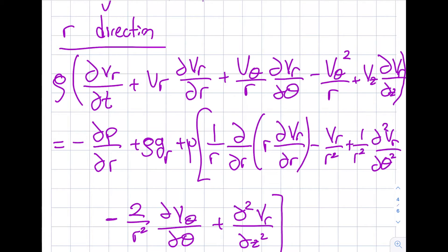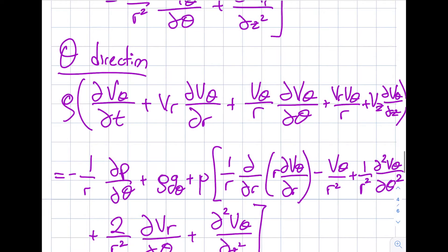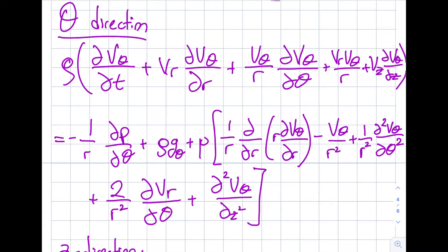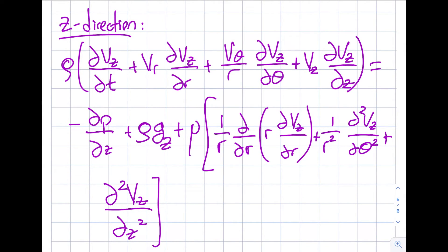The θ-direction equation is similarly messy — the left side is the acceleration, there's a pressure gradient term, a density-times-gravity term, and the viscous term. If viscosity is zero, the parentheses vanish and you recover Euler's equation in the θ-direction. The z-direction equation is relatively easier than the r and θ directions.